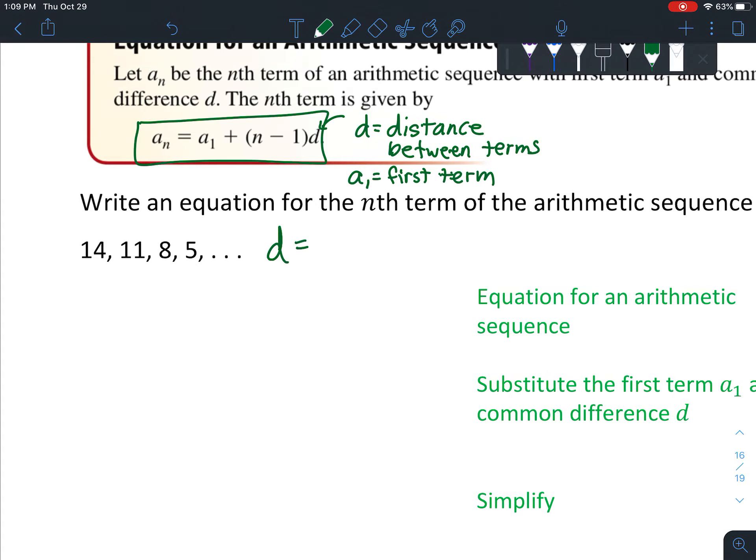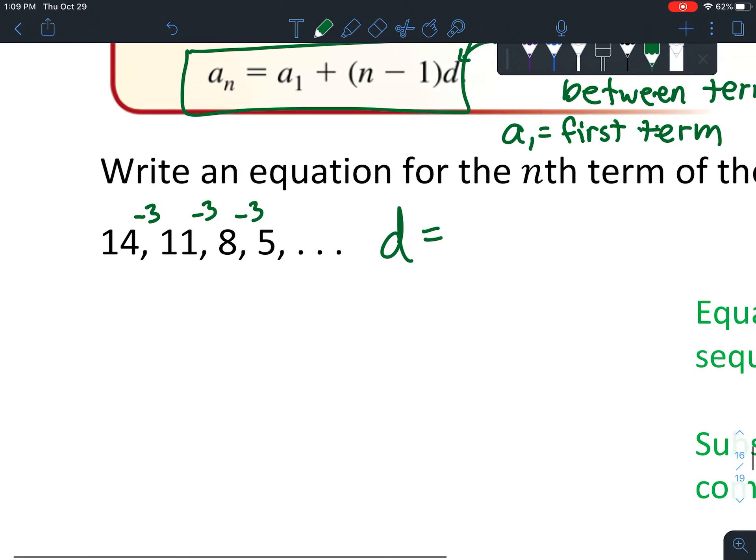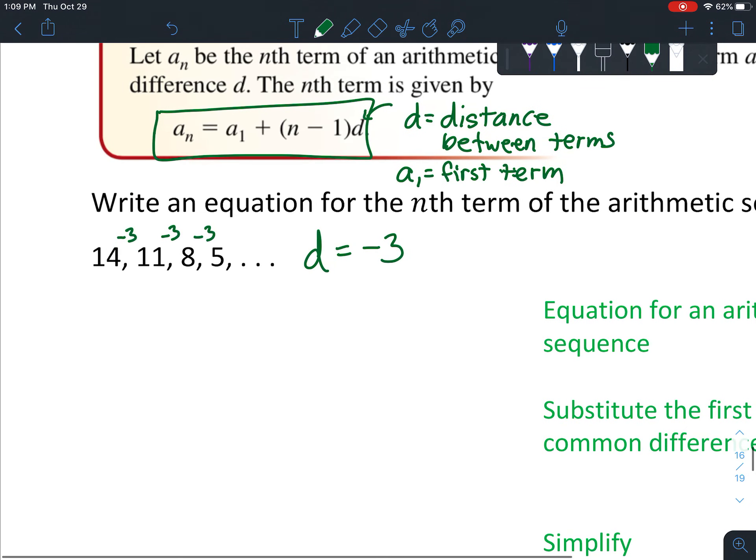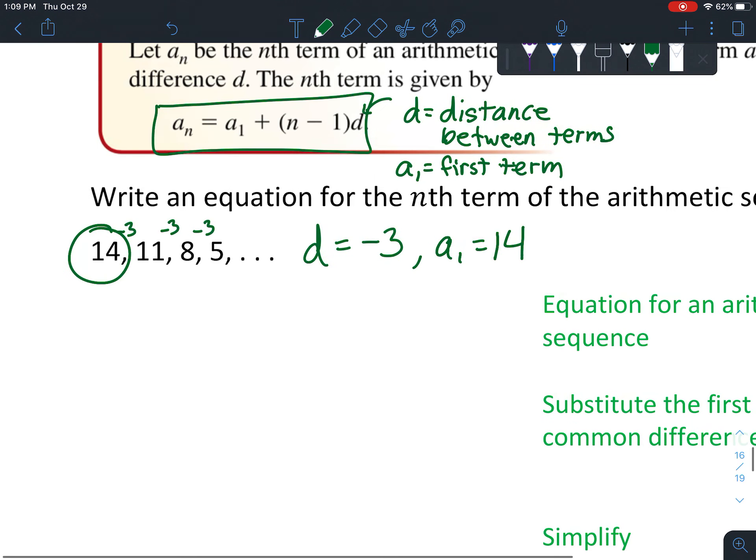So let's do that right now. So the first thing you want to do is find d equals... It looks like this time, to go from 14 to 11, you add negative 3. To go from 11 to 8, you also add negative 3 and keep going. So it looks like the distance between the numbers is negative 3. And then, I guess distance is normally positive, but this isn't exactly a distance. It has to be negative if it's going downward. And then a sub 1 is just the first term. Whichever one is listed first is going to be that amount.